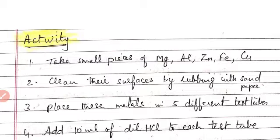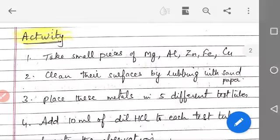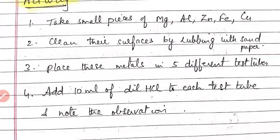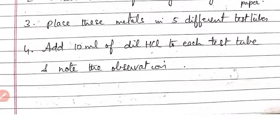First, we have to do one activity regarding the reaction of metals with acid. So this is the activity. First point, take some pieces of magnesium, aluminium, zinc, iron and copper. Clean the surfaces by rubbing with sandpaper. Place these metals in 5 different test tubes as shown in the figure. Now add 10 ml of dilute HCl to each of the test tubes and note the observations.